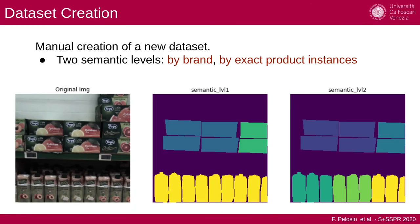We also introduced a new dataset which is divided into semantic levels. Level one is where all the objects made by the same brand share the same ID, and the second semantic level is where each exact product instance shares the same ID.